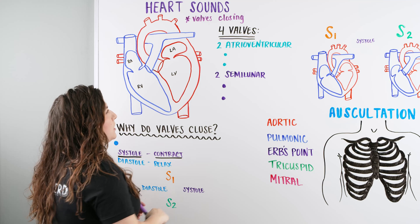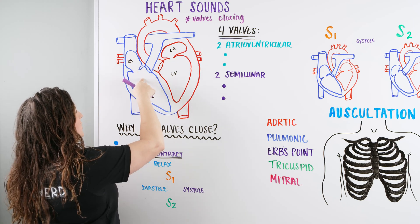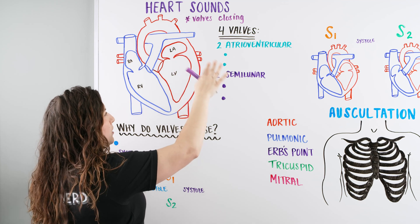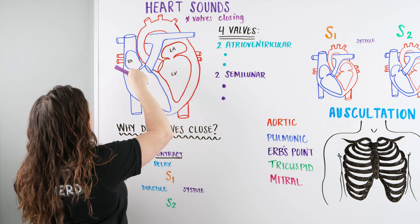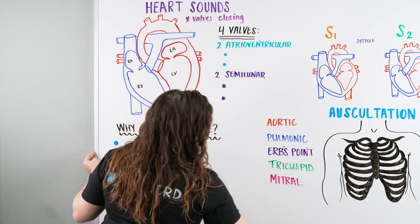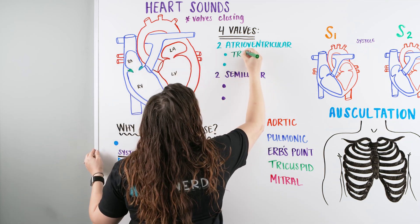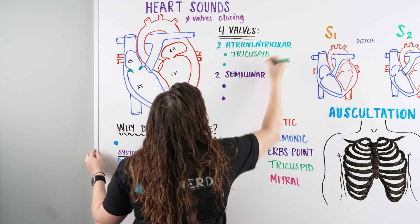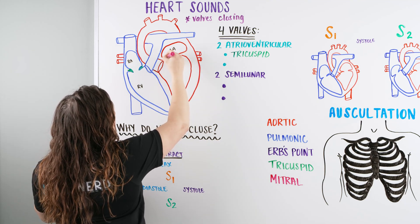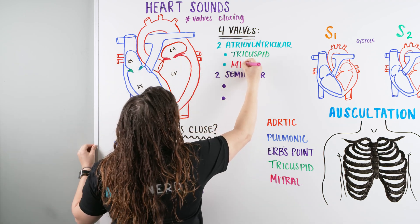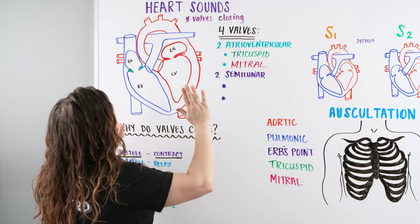Let's focus in first on the two atrioventricular valves. Atrioventricular means the valves between the atria and the ventricle. On the right side, between the right atria and right ventricle, we have the tricuspid valve. On the left side, between the left atria and left ventricle, we have the mitral valve. So we have our two atrioventricular valves, and those two valves group together as one and can make a heart sound.